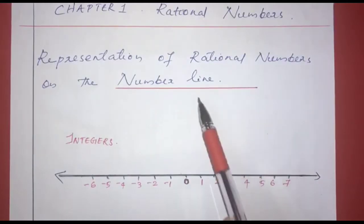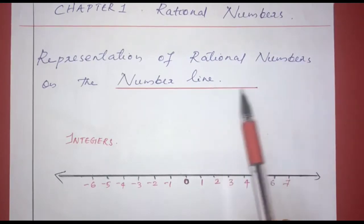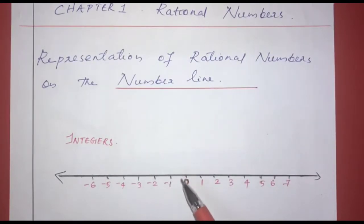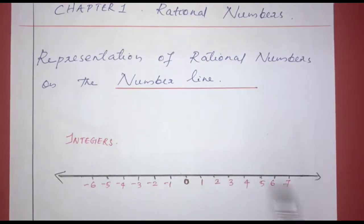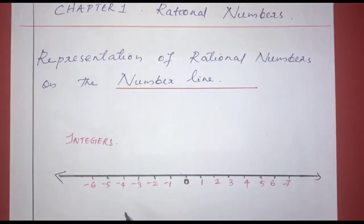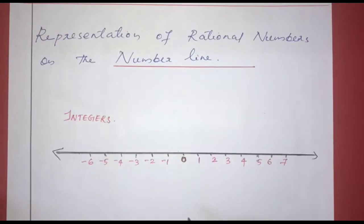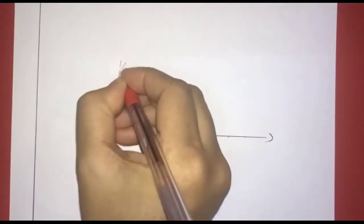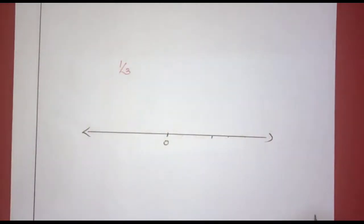Chapter 1, Rational Numbers. The next section is Representation of Rational Numbers on the Number Line. The integer is marked on the number line. If you draw a line, it extends in both directions. In the center is 0, on the right are positive numbers, on the left are negative numbers. In this section, we have a rational number — we will mark that on the number line. For example, 1 by 3 is a rational number.